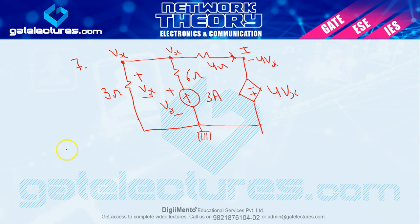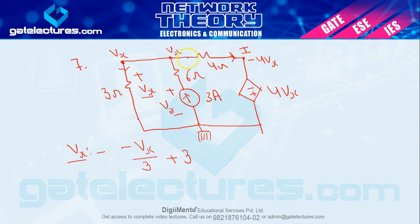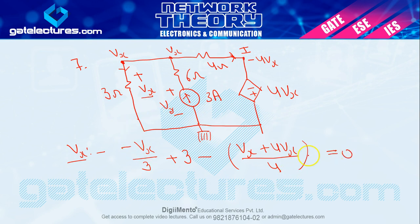Vx पे nodal apply करें। 3 ohm के across current outgoing: −Vx/3। 3 ampere incoming: +3। I (4 ohm के through) outgoing: −I = −(Vx − (−4Vx))/4 = −(Vx + 4Vx)/4 = −5Vx/4। Equation: −Vx/3 + 3 − 5Vx/4 = 0। यह equation completely Vx में है, so Vx solve हो जाएगा।